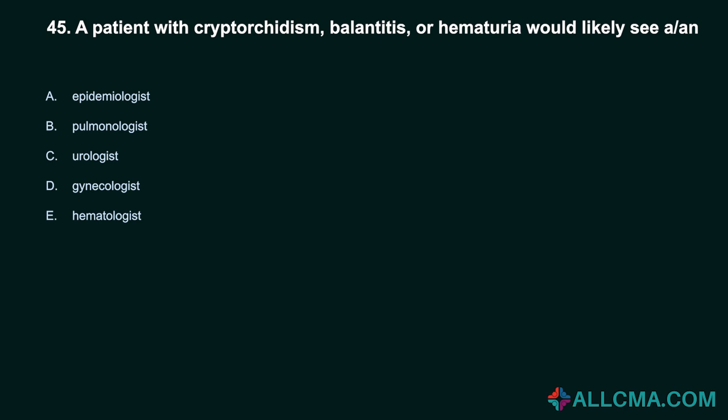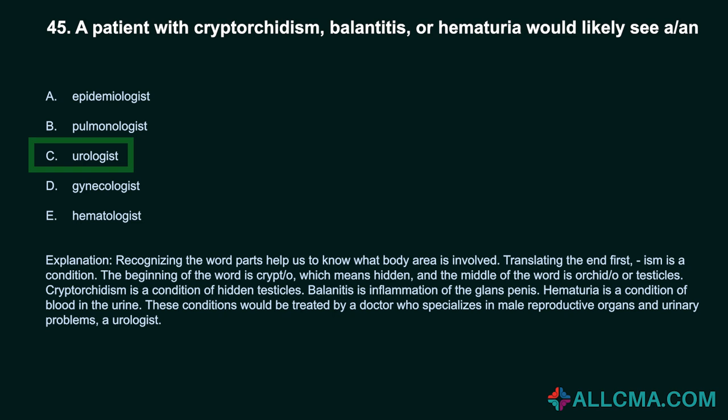Question 45: A patient with cryptorchidism, balanitis, or hematuria would likely see a: A. Epidemiologist. B. Pulmonologist. C. Urologist. D. Gynecologist. E. Hematologist. Correct answer: C. Urologist. Crypt/o means hidden, orchid/o means testicles, so cryptorchidism is a condition of hidden testicles. Balanitis is inflammation of the glans penis. Hematuria is a condition of blood in the urine. These conditions would be treated by a doctor who specializes in male reproductive organs and urinary problems — a urologist.